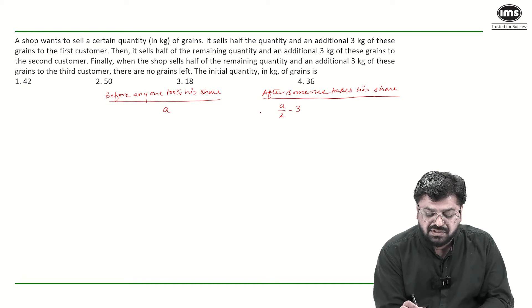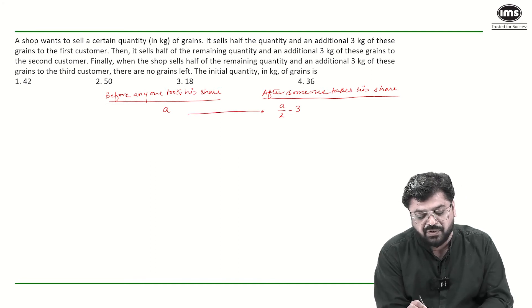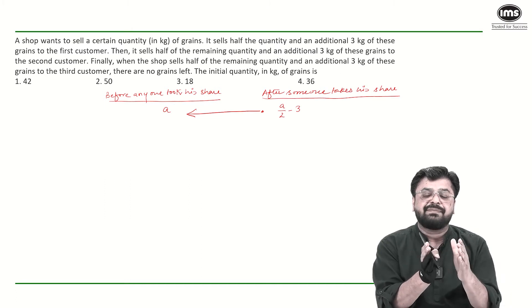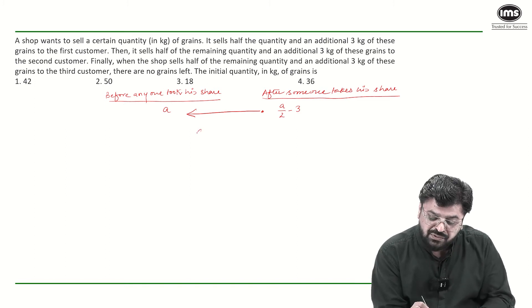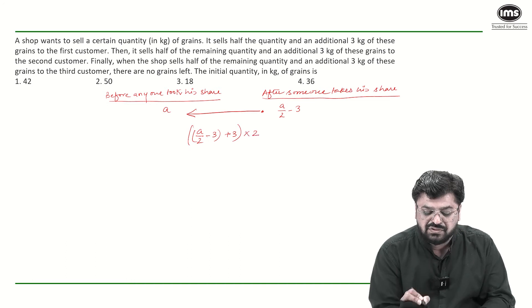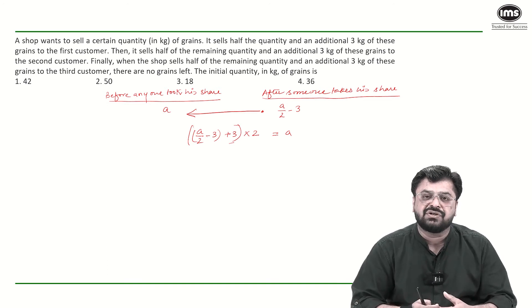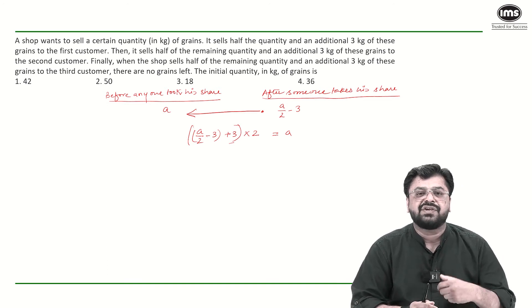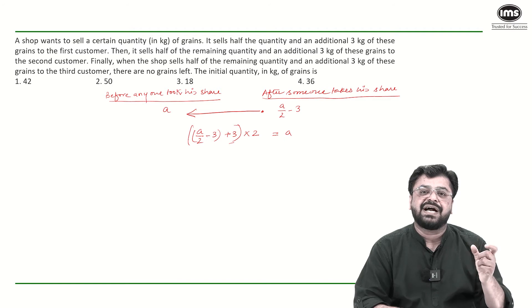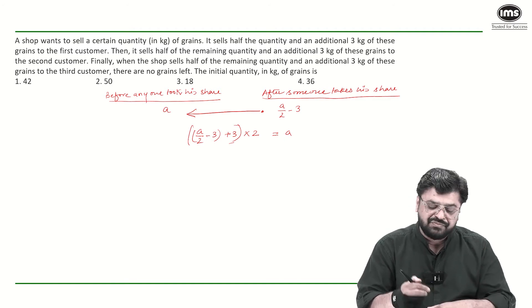Now, if you want to reach from this point after to the initial point, how would you reach from A by 2 minus 3 to A? So, you need to add 3, add 3 and then multiply it with 2. It will give you A. So, once someone has taken a share, whatever the quantity is left, if you add 3 in that and multiply it with 2, you will get the quantity which was there when that guy did not take a share initially.